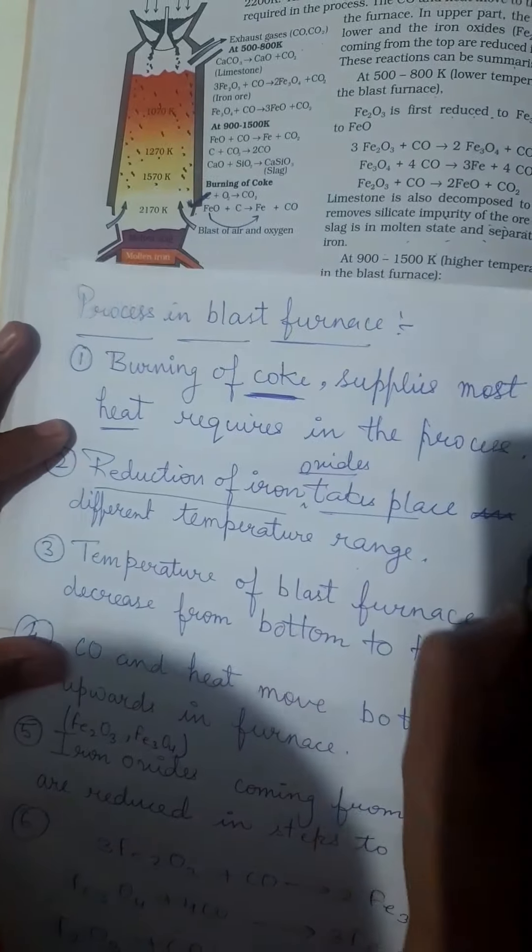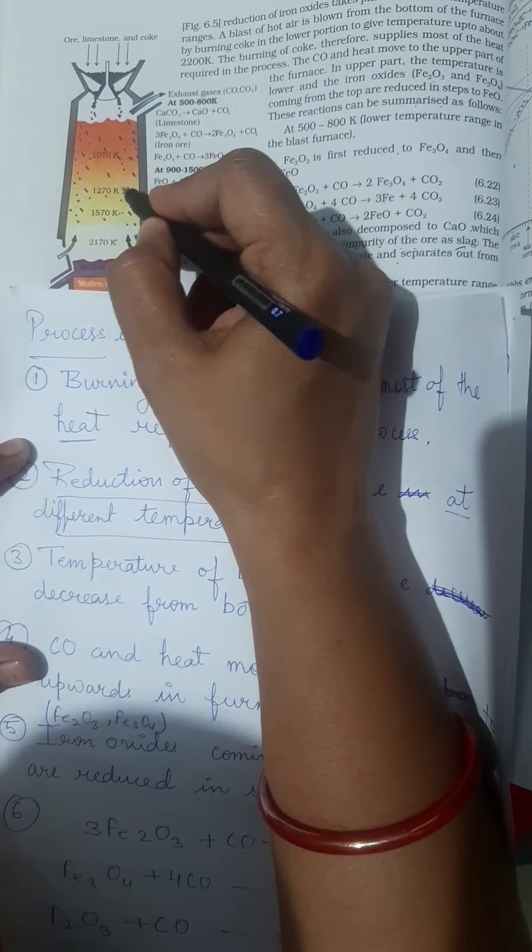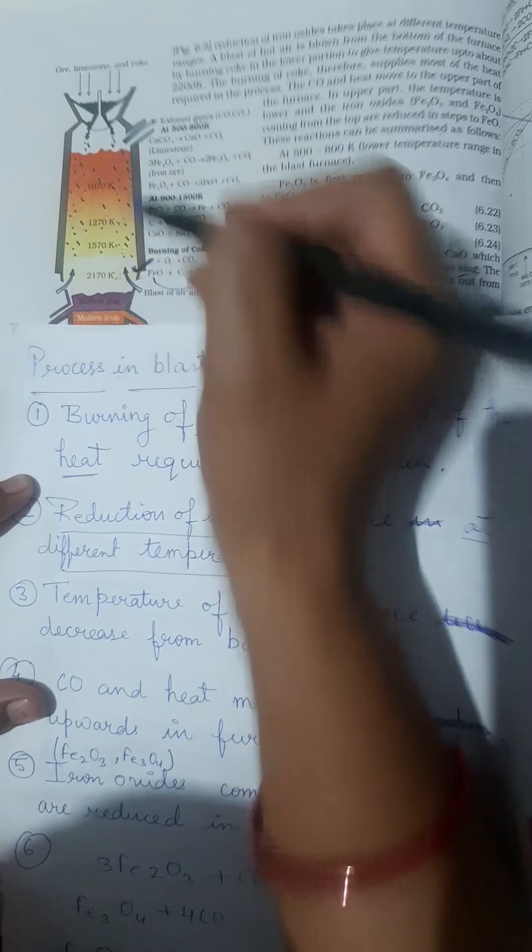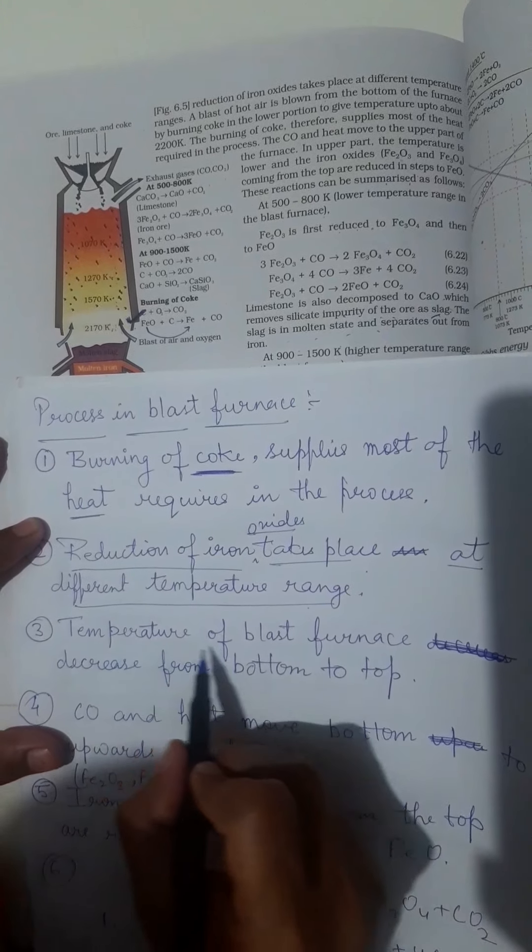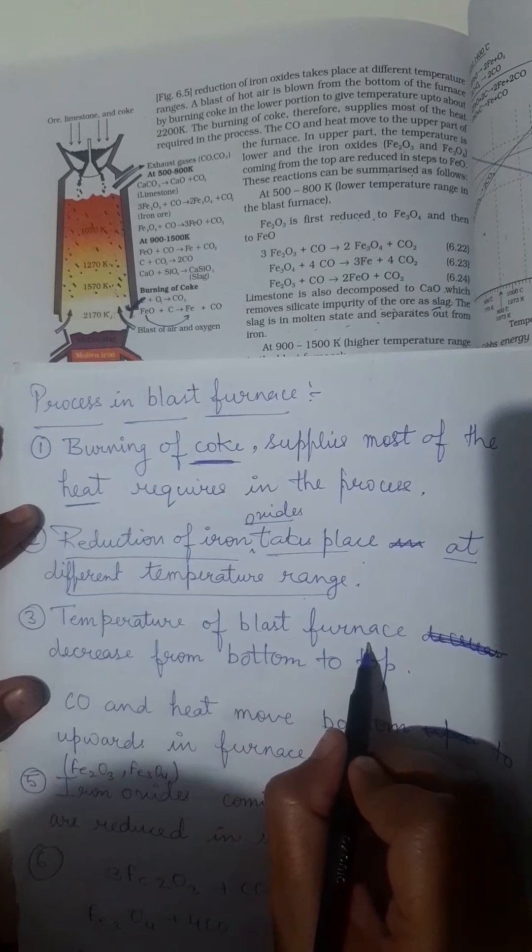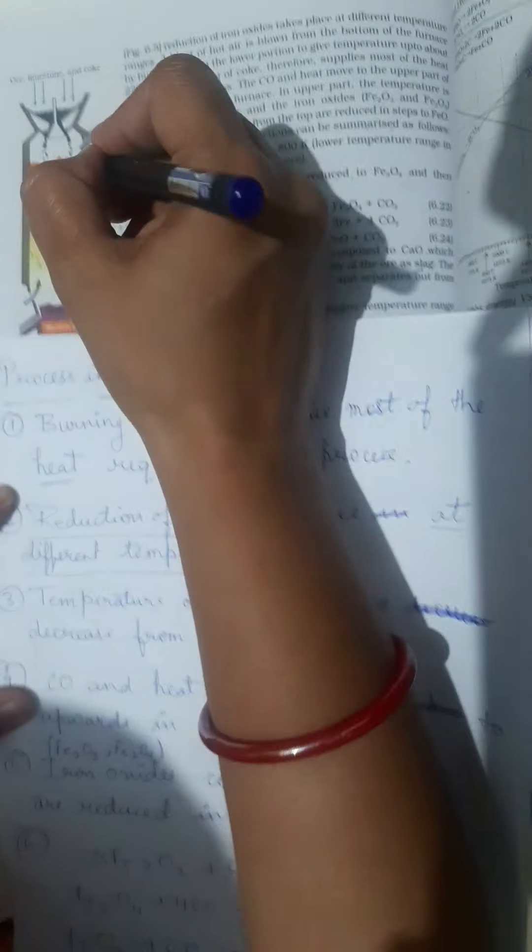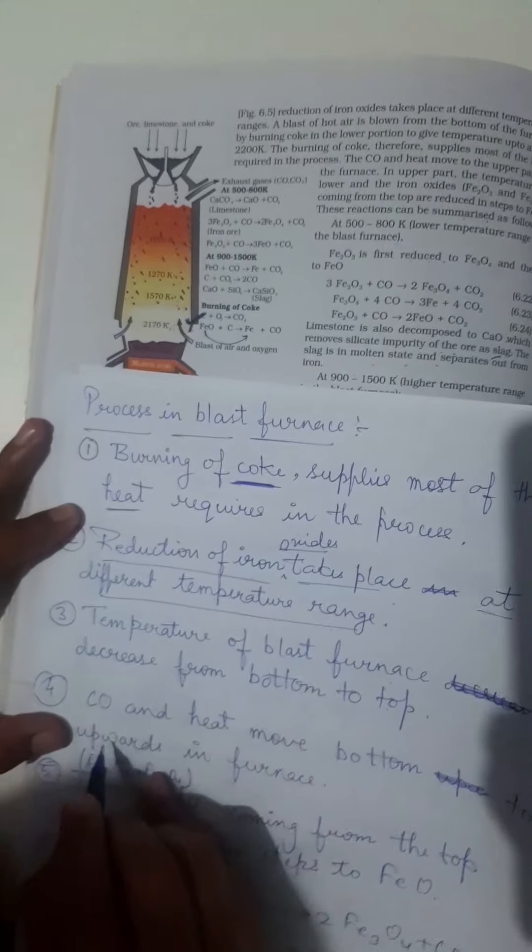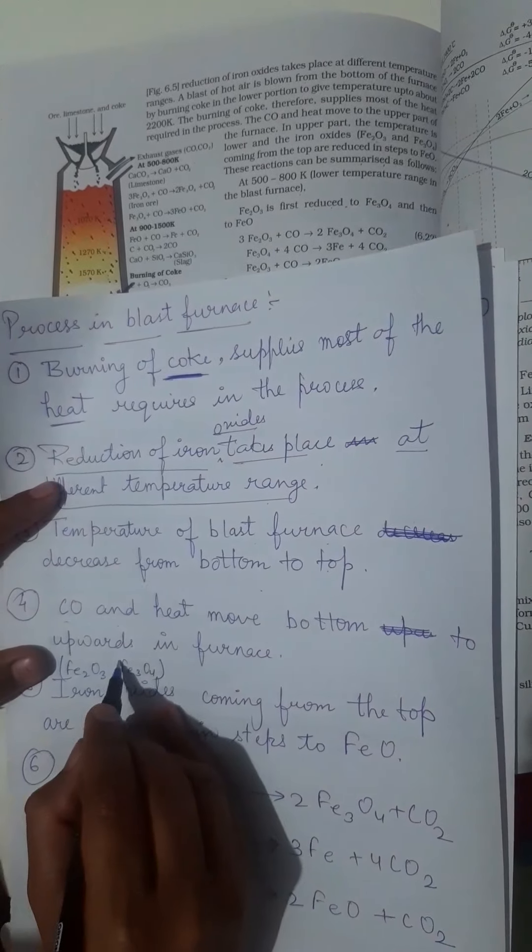The reduction of iron oxide takes place at different temperature ranges. You can see here different temperature ranges are there. At each temperature range, reduction of iron oxides occurs. Third point: temperature of blast furnace decreases from bottom to top. Carbon monoxide and heat move bottom to upwards.